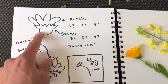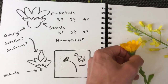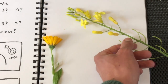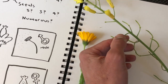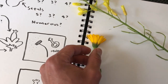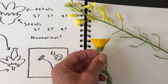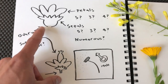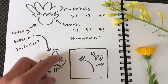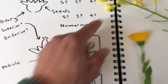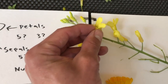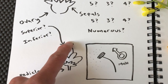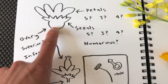Next we want to pay attention to the ovary. The ovary is the part that turns into the fruit. On some flowers it is a pod-like structure; on others it turns into a capitulum or a fruit. We want to pay attention to whether the ovary is on top of the petals — which is called superior — or below them, which is called inferior.